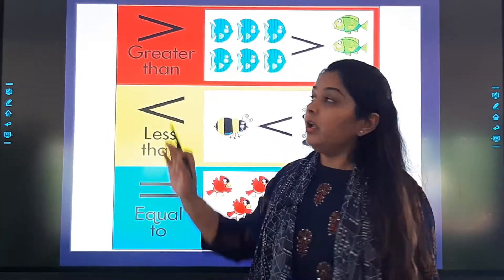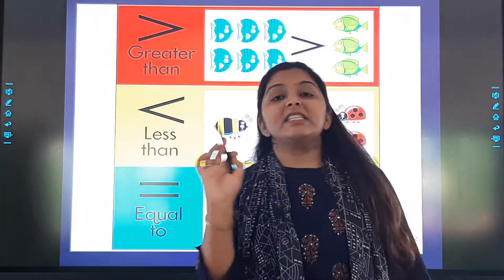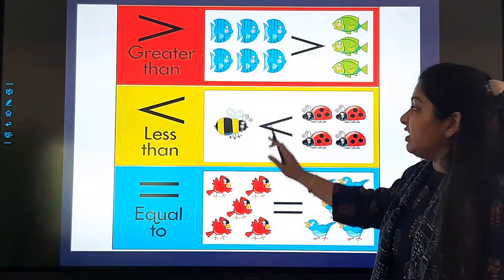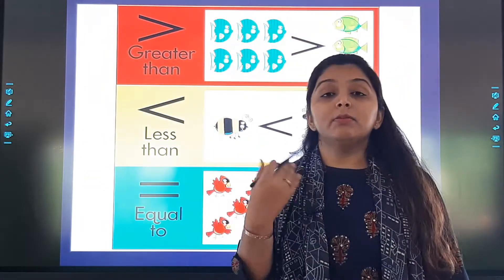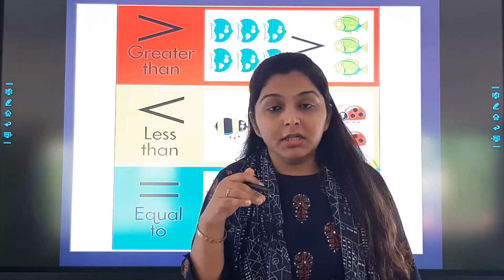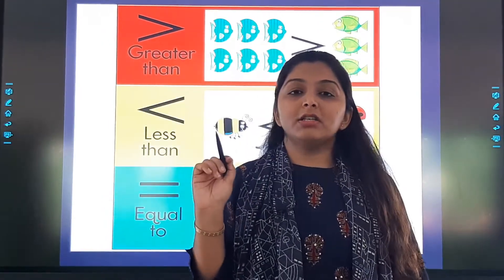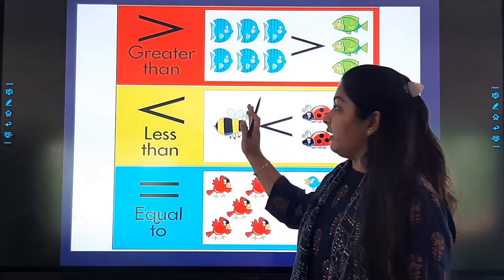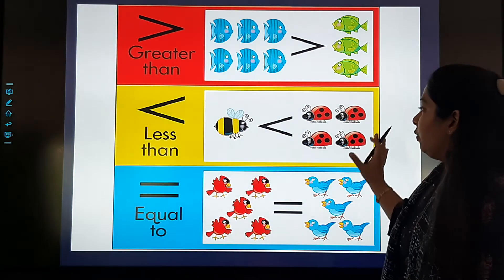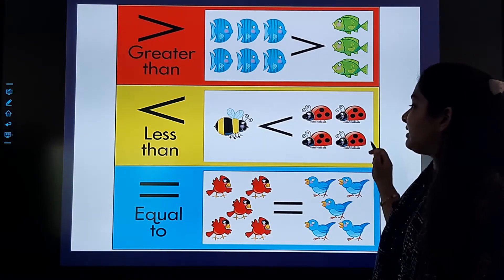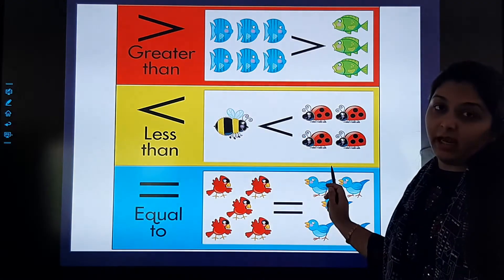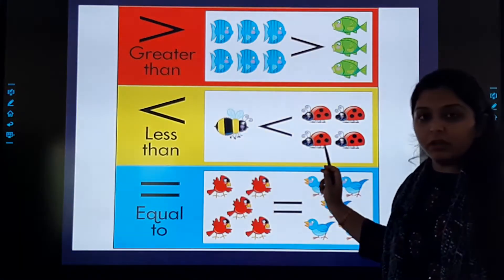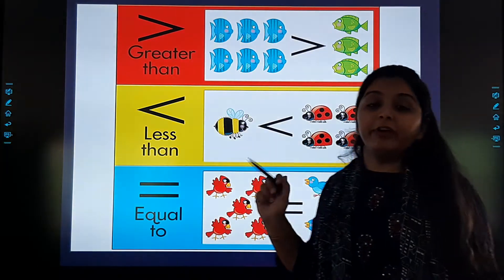Is it clear? Understood? Drawing aap kuch bhi kar sakte ho, but the concept should be very much clear. Next is your less than. Here, iski jaghe peh aap again stars, circles, triangles — aap kuch bhi drawing kar sakte ho. Whichever you like, but the concept should be very much clear. Yaha peh one hai, and yaa peh three bees hai — so you have to be very clear that yaha peh ziada hai, but we will say less than sign. In the same way, yaha peh aap ek circle draw karo, and yaa peh aap four circles draw karo, but the sign will be less than.